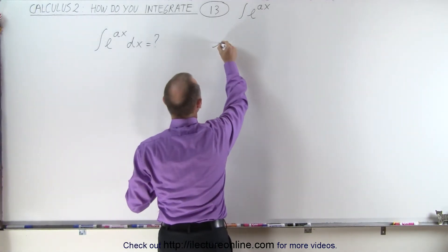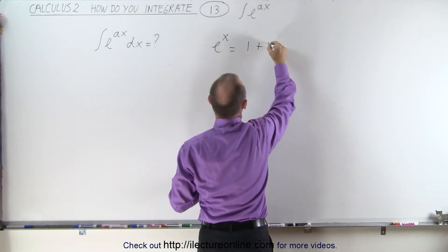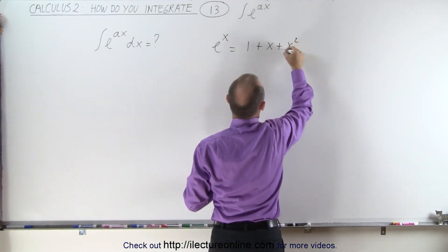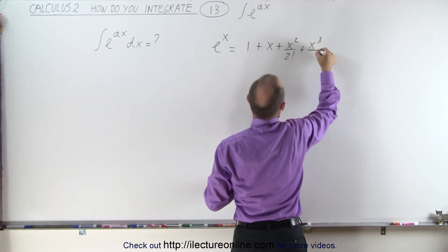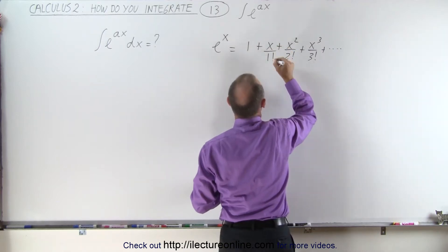Let's start with e to the x, which can be written as an infinite sum: 1 plus x over 1 factorial plus x squared over 2 factorial plus x cubed over 3 factorial plus and so forth.